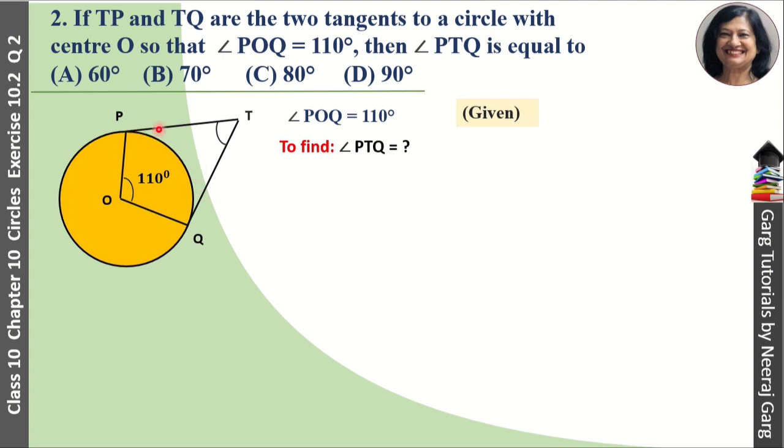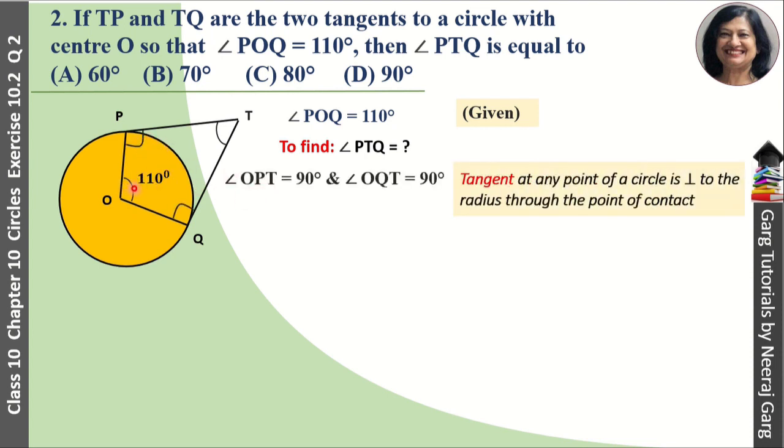Now you know that PT and OP is tangent and radius. Tangent and radius make a 90 degree angle. So angle OPT, this angle and this angle, will be 90 degrees because tangent at any point of a circle is perpendicular to the radius through the point of contact.